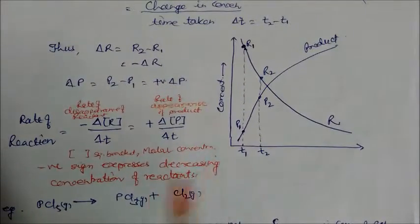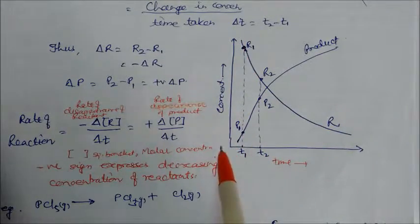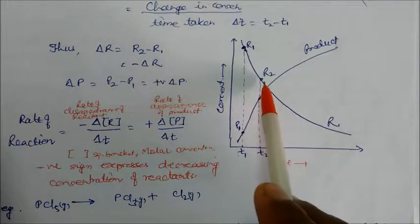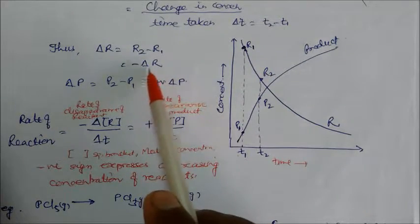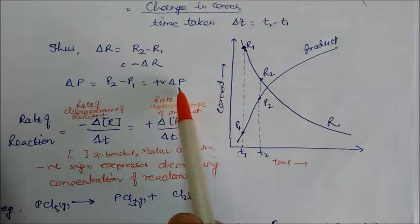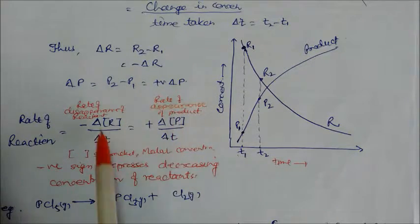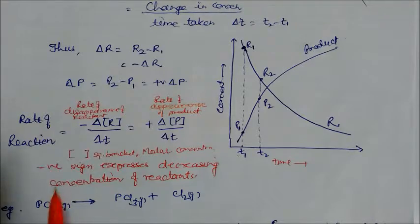In the concentration-time graph, the reactant concentration decreases while product concentration increases. When reactant decreases from R₁ to R₂, product increases from P₁ to P₂. So the rate of disappearance of reactant equals the rate of appearance of product. For example, PCl₅ converting to PCl₃ and Cl₂: the rate of reaction is the decrease in concentration of PCl₅ by time taken, or the increase in concentration of PCl₃ or Cl₂ by time taken. The negative sign indicates decreasing concentration of the reactant.